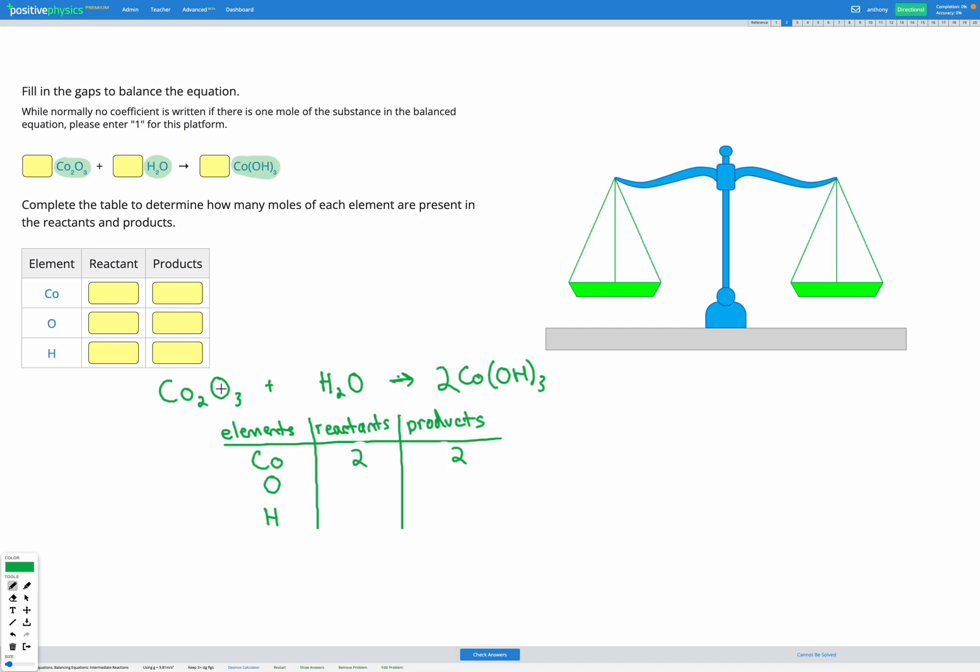For the O's, I've got an O3 and an O on its own before. So I've got four O's before. Afterwards, I've got an OH with a subscript three. So that's three sets of O. And I have a coefficient two beforehand. So that's two times three, which is six O's in my products.